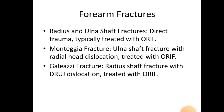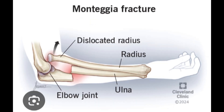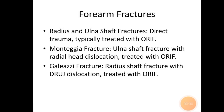Forearm fractures include radius and ulna shaft fractures from direct trauma, typically treated with ORIF. Monteggia fracture involves an ulnar shaft fracture with radial head dislocation, treated with ORIF. Galeazzi fracture involves a radius shaft fracture with distal radioulnar joint dislocation, also treated with ORIF.